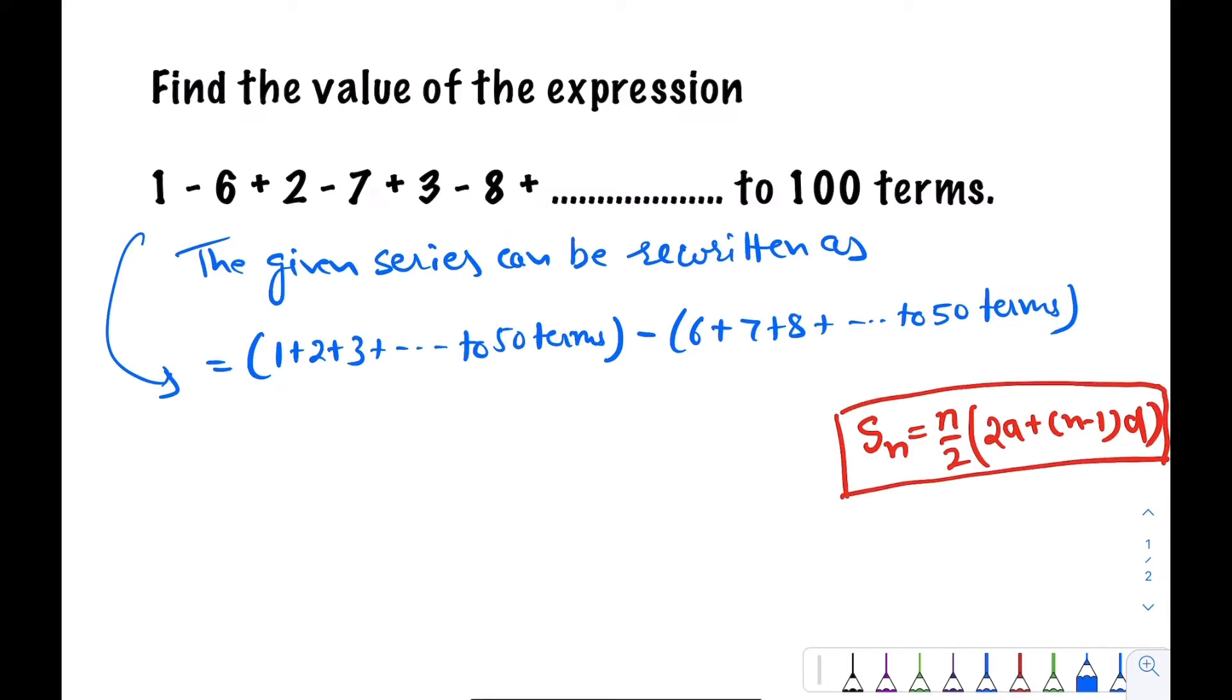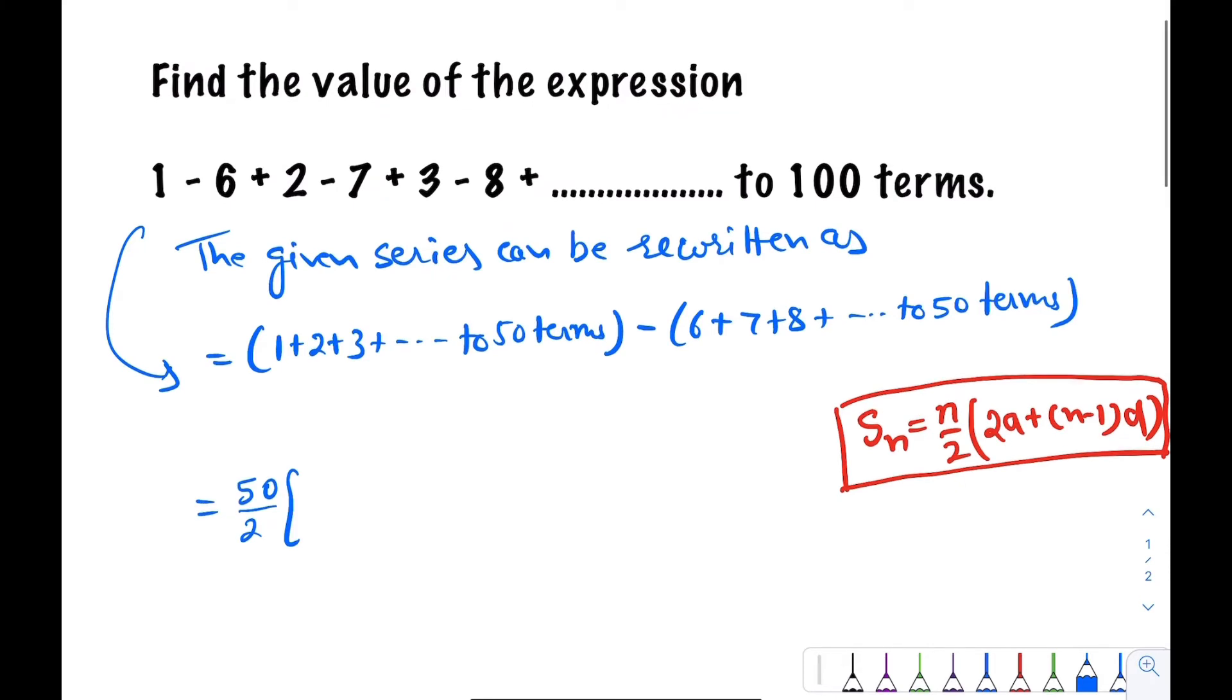So we can write this as 50/2 * [In the first series a is 1, d is 1, and n equals 50, so 2*1 + (50-1)*1] minus...